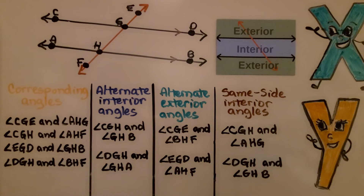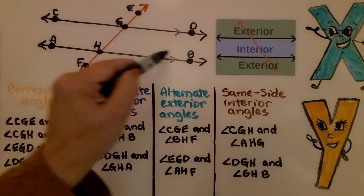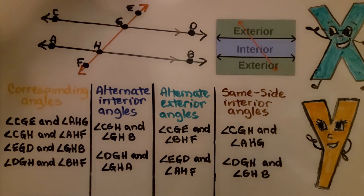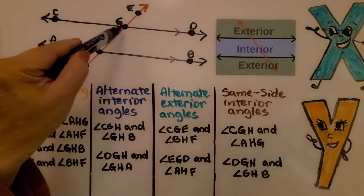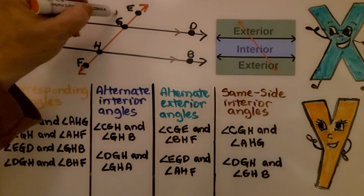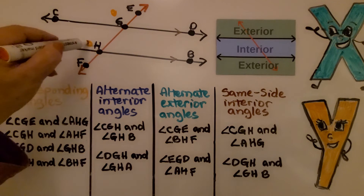Keep in mind that angles may not be labeled with numbers — they may be labeled with letters. Here we have line AB, line CD, and transversal EF with intersections at G and H.